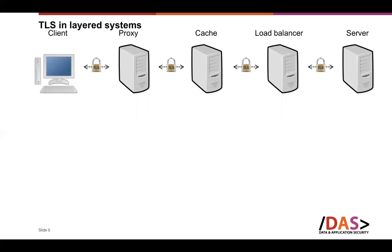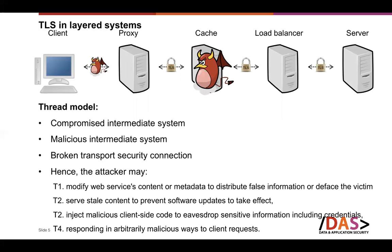This means that if one of these intermediate nodes is compromised or malicious, an attacker can change anything in the message. If the TLS connection is somehow broken, the attacker can also change anything. Following our threat model, the attacker can modify metadata, modify or replace content, inject malicious client-side code, or respond in arbitrary malicious ways to client requests. This is what we call a man-in-the-middle attack.